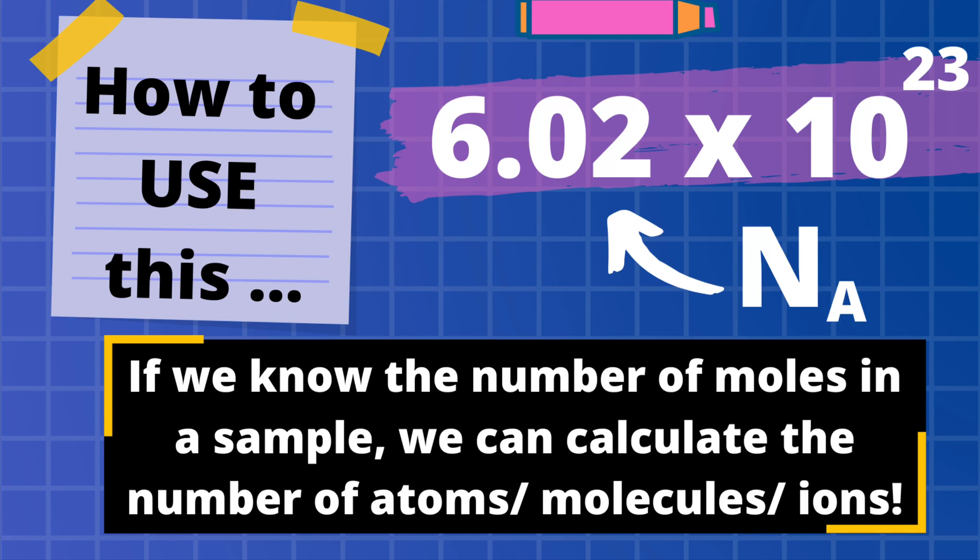For example, if you knew the number of moles of sodium atoms and multiplied that by the Avogadro constant, it would tell you the number of sodium atoms in your sample. Similarly, if you knew the number of moles of carbon dioxide, multiplying by the Avogadro constant gives you how many individual molecules of carbon dioxide are in your sample.